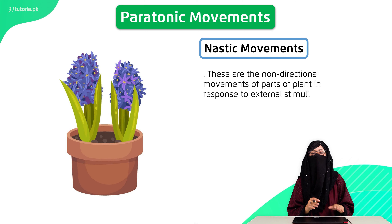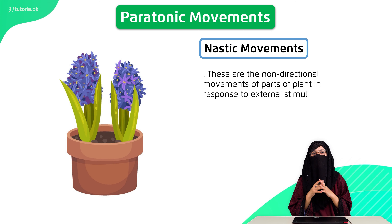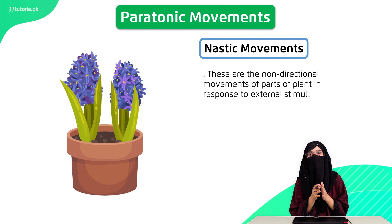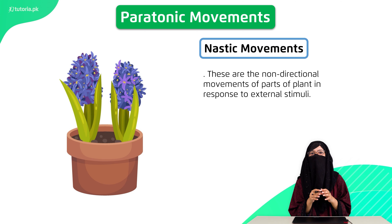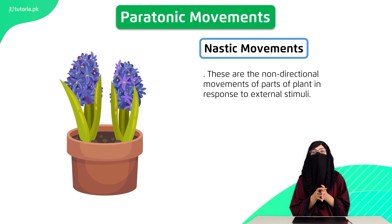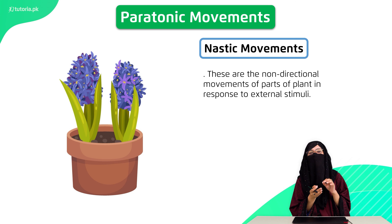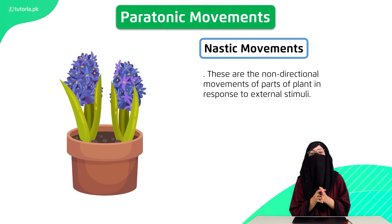The other movement is nastic movement. This is a non-directional movement — there is no specific direction. In this movement, plants close, such as the Venus flytrap. We also study nastic movement through the Venus flytrap example.